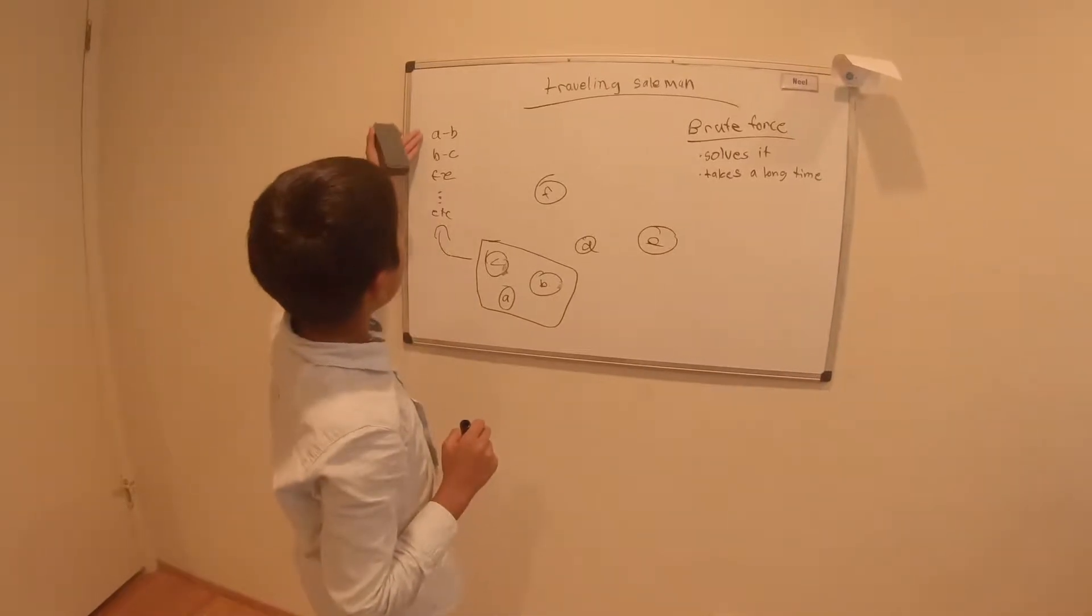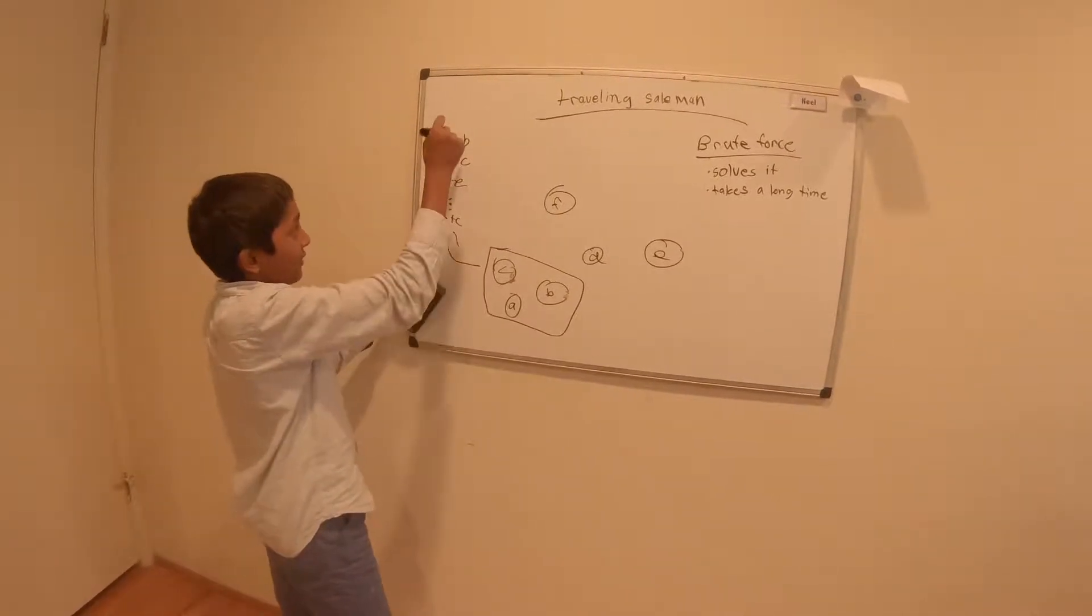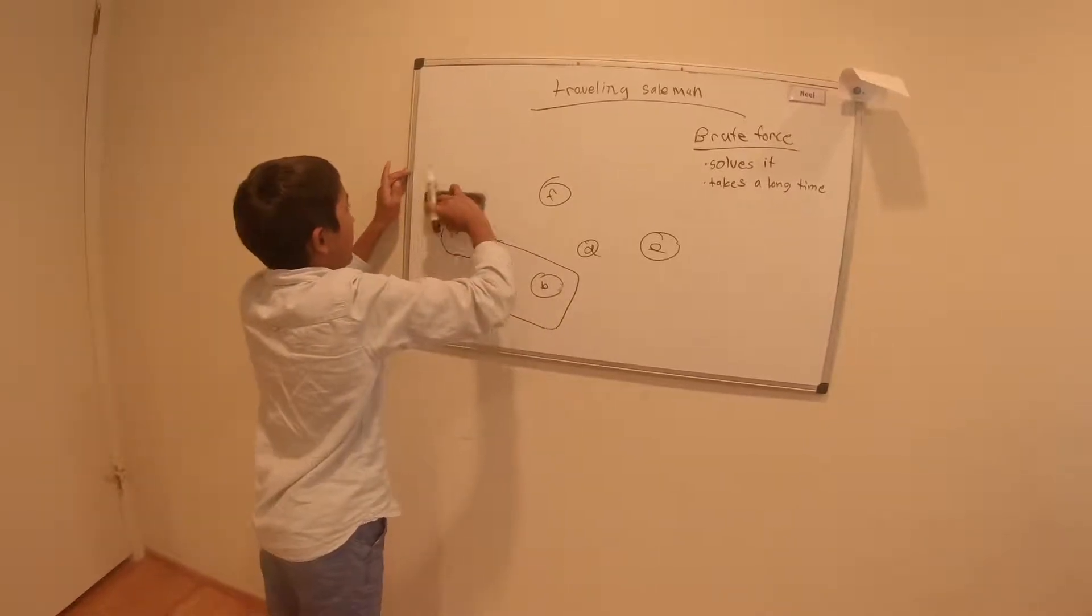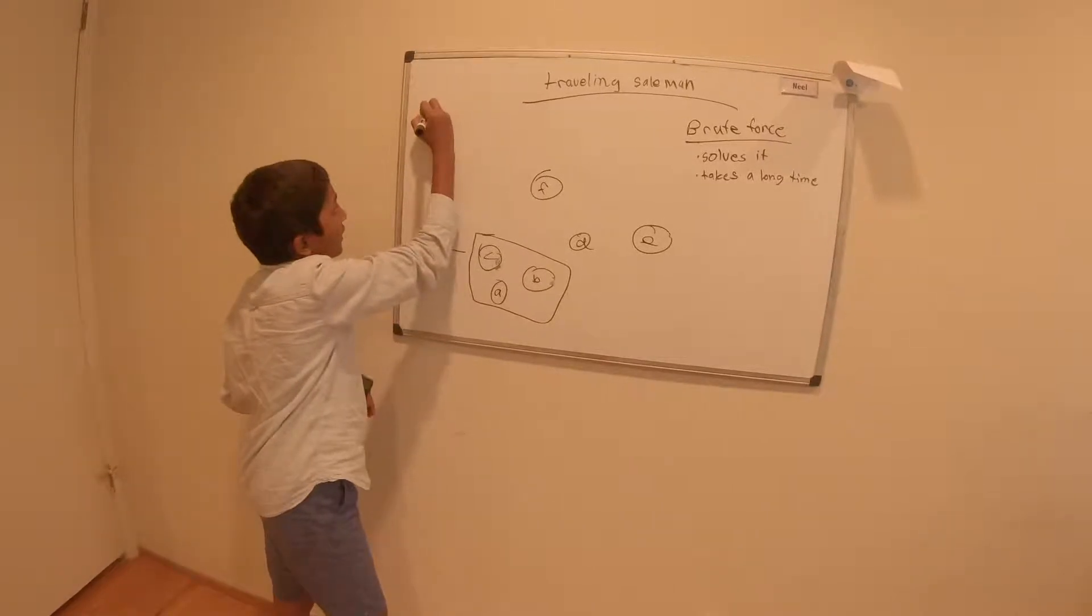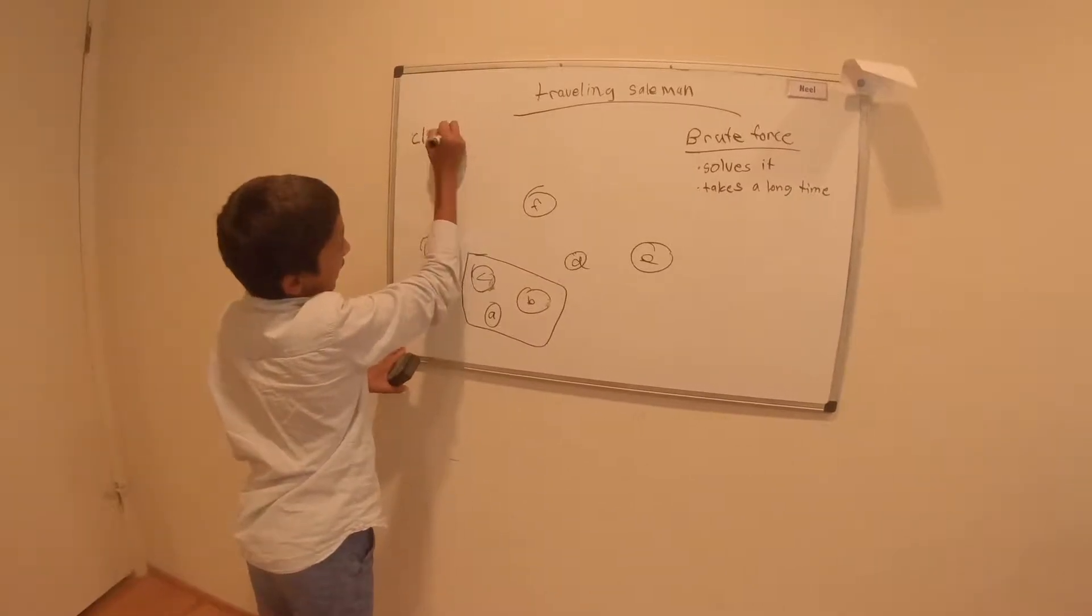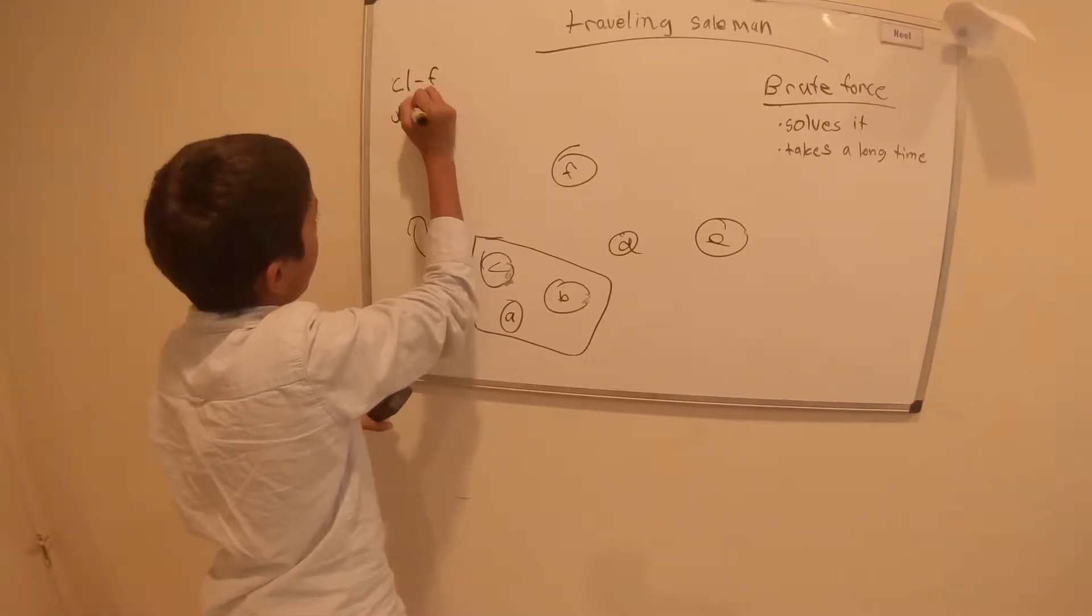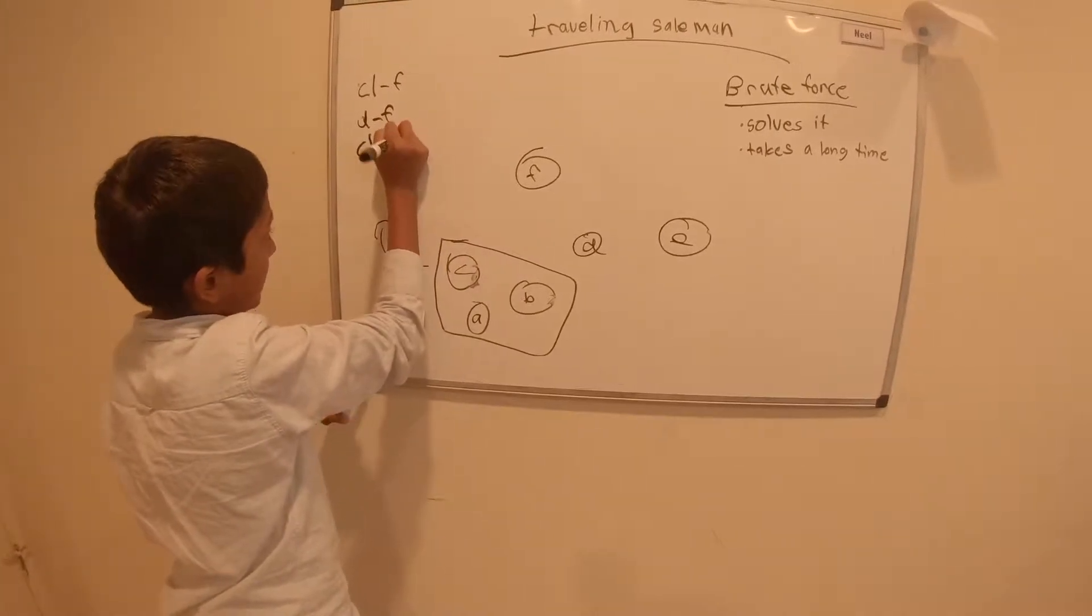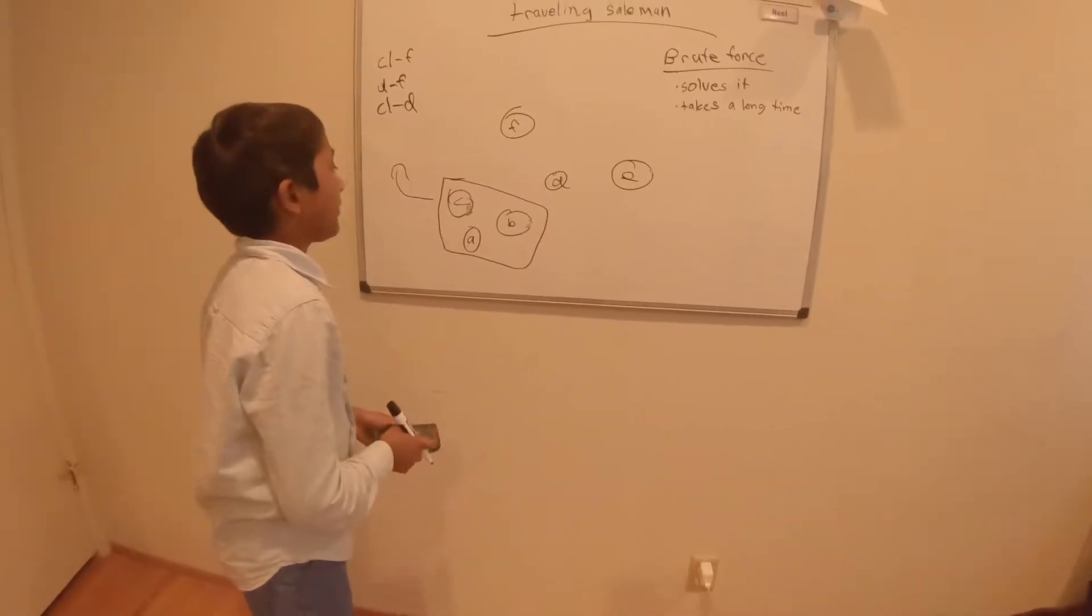So you can kind of treat this whole thing as one of these points, so you don't have to do—instead of A to B—there would be like this whole group. Let's call it a cluster, so the cluster to F, D to F, cluster to D, something like that would be what you do.